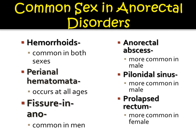Which sex is more commonly affected? In anorectal disorders, hemorrhoids are seen in both males and females commonly. Perianal hematoma is seen equally in all ages and both sexes. Fissure in ano is more common in males. Anorectal abscess is also more common in males. Pilonidal sinus is common in males. Rectal prolapse is very common in females.